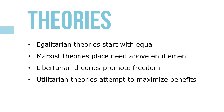Egalitarian theories start with the basic premise of equality or equal shares for all. Marxist theories place need above desert or entitlement. Libertarian theories promote freedom from interference by government in social and economic spheres; therefore, merit, entitlement, and productive contributions are given weight over equal shares. Utilitarian theories attempt to maximize benefits for individuals and society, with a mixed emphasis on entitlements and needs.